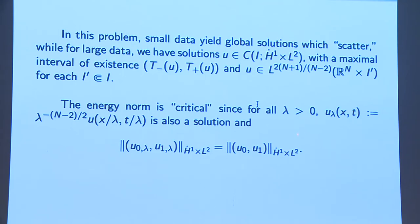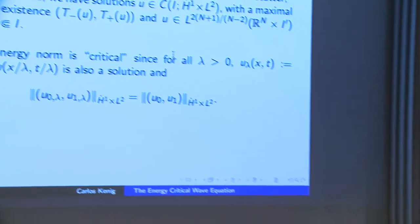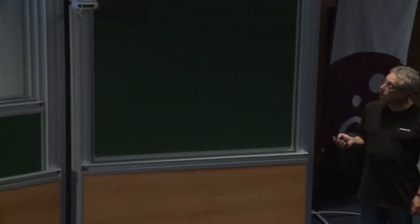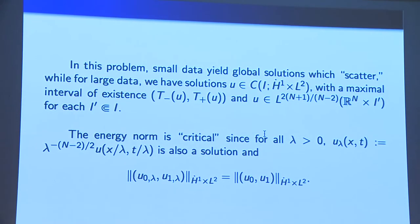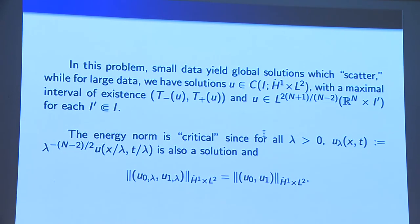Why do we call this equation energy critical? It is because it is critical with respect to the scaling in the energy space. If we have a solution U and scale it by U(x/λ, t/λ) multiplied by the correct power of λ — in this case λ to the minus (n minus 2) over 2 — that is also a solution. The norm of the initial data is independent of λ, so we cannot make it either small or large by moving the scaling parameter. That is why we call this energy critical.